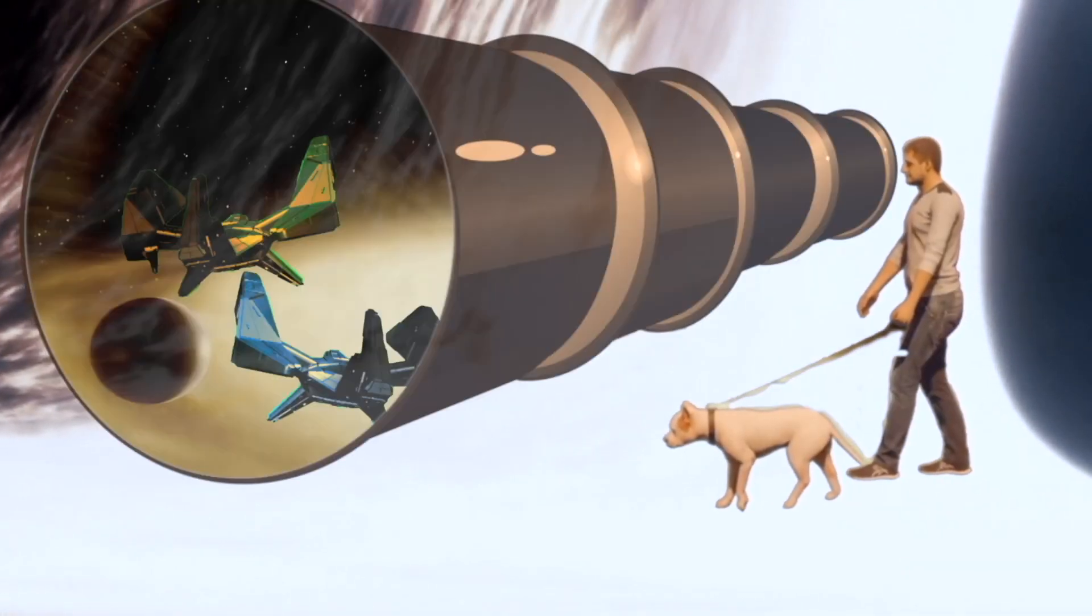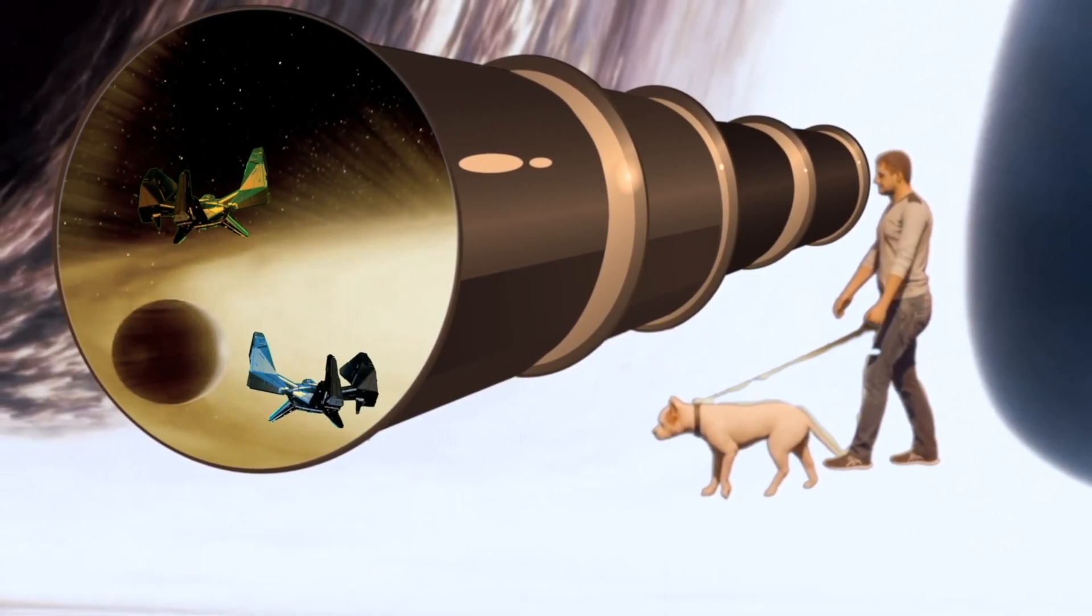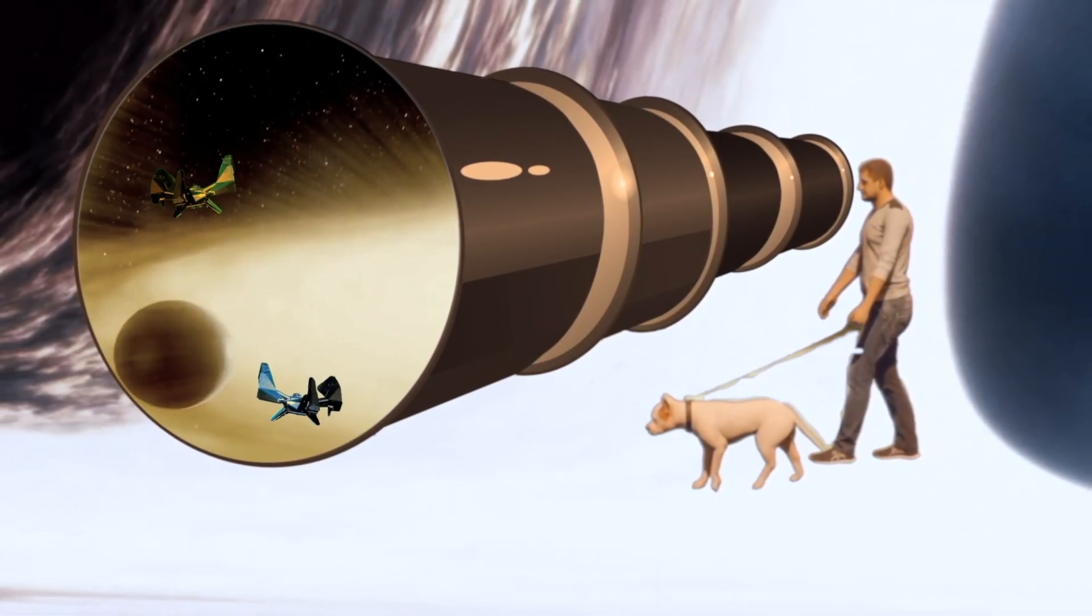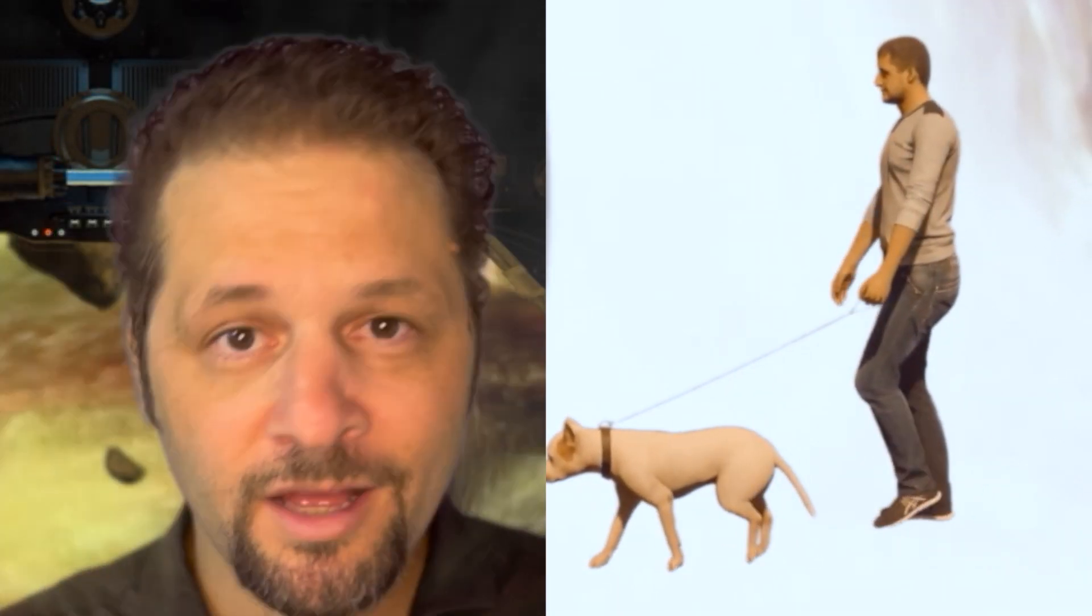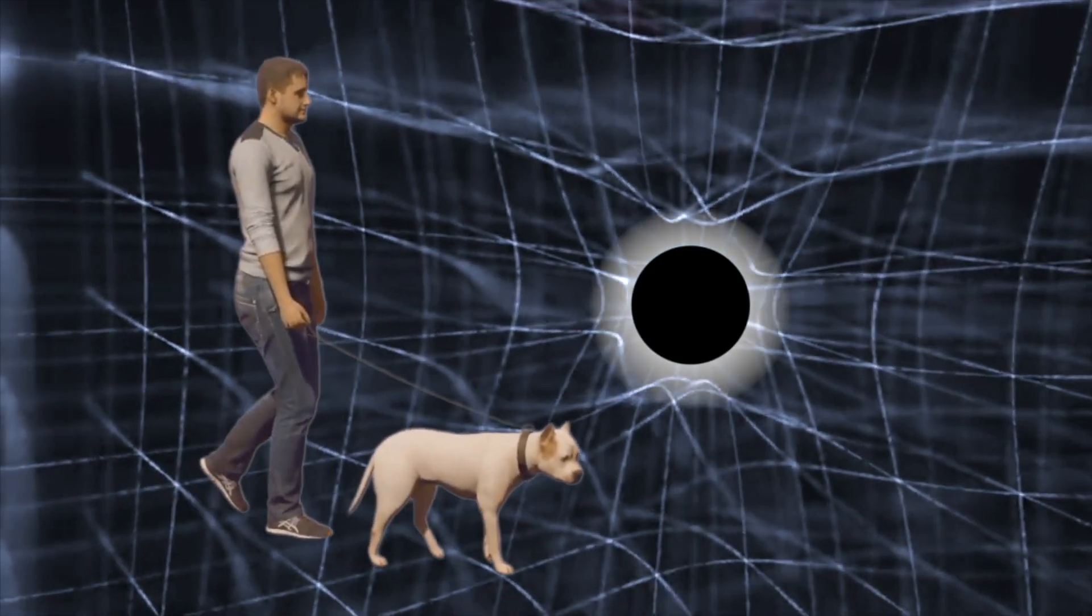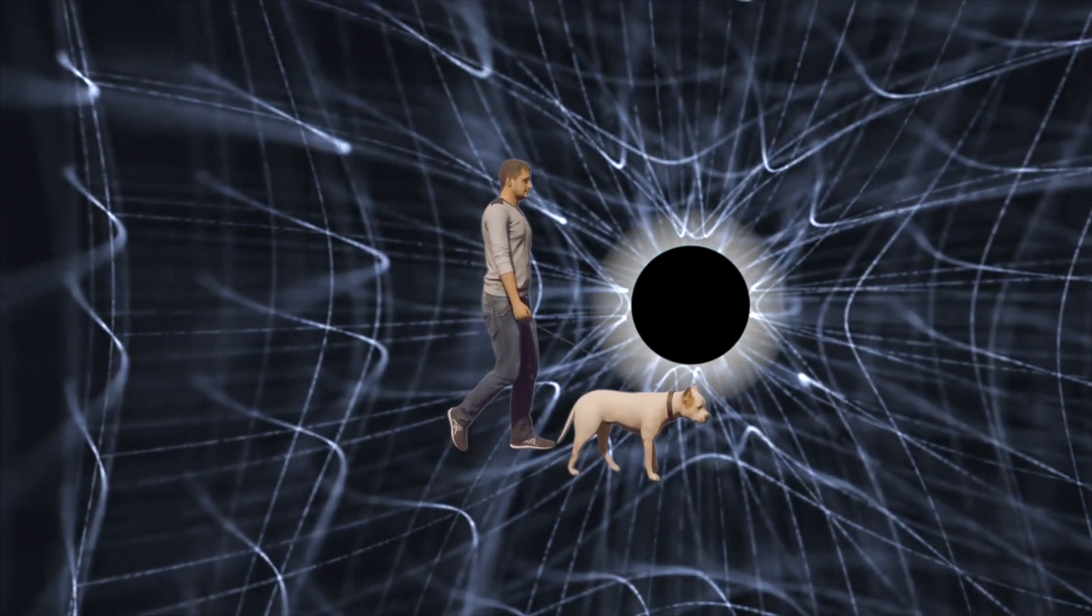So you would also observe the two spaceships accelerate and expand from each other, and from yourself as well. But for me, my ships are just floating normally, because the black hole's gravity is not affecting me as much. Each of us simply experiences a relative motion through space-time differently, because of the additional gravity that you and your dog are subjected to.